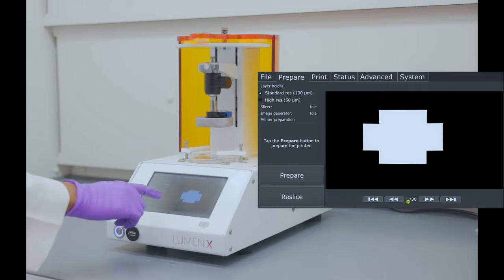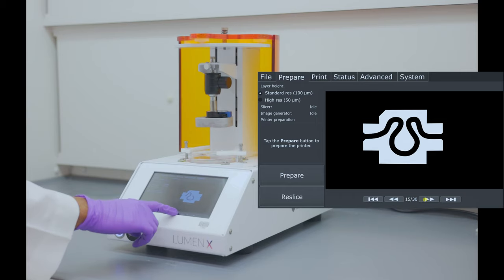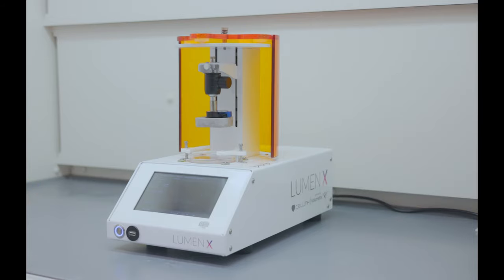We can preview the slices by scrolling through the layers. These slices are the images that are going to be projected onto the resin to build the object.